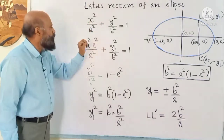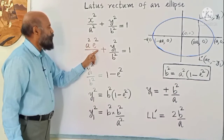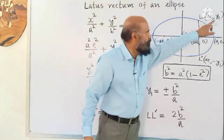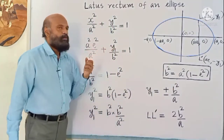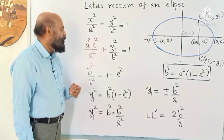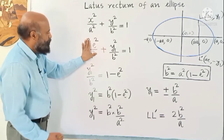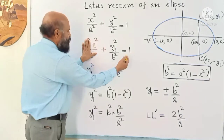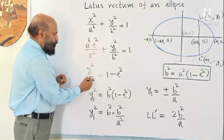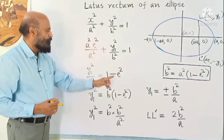Substituting x = ae into the ellipse equation: a²e² / a² + y₁² / b² = 1. The a² cancels, giving e² + y₁² / b² = 1. Taking e² to the other side, we get y₁² / b² = 1 − e².